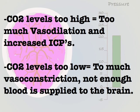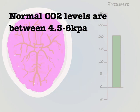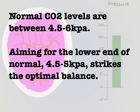When manipulating CO2 levels for ICP control it is best to aim for the lower end of the normal range for carbon dioxide. A normal range for CO2 from an arterial blood gas is between 4.5 to 6 kPa. Aiming for a CO2 of between 4.5 to 5 kPa will help to promote vasoconstriction within the brain without causing unintended consequences.